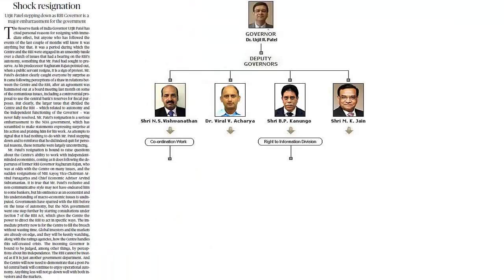The RBI basically has one governor — that was Urjit Patel — and then four deputy governors. These four deputy governors are of two types: two are from outside and two are from within the RBI. The two from outside include one commercial banker and one economist. The central bank deputy governor can be appointed for a term of about five years or up to the age of 62, whichever is earlier.